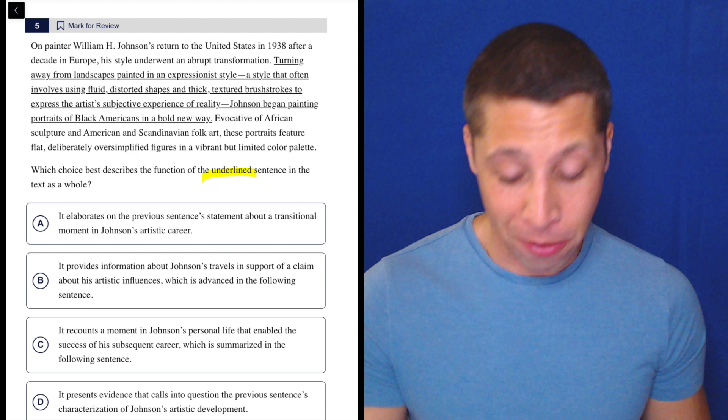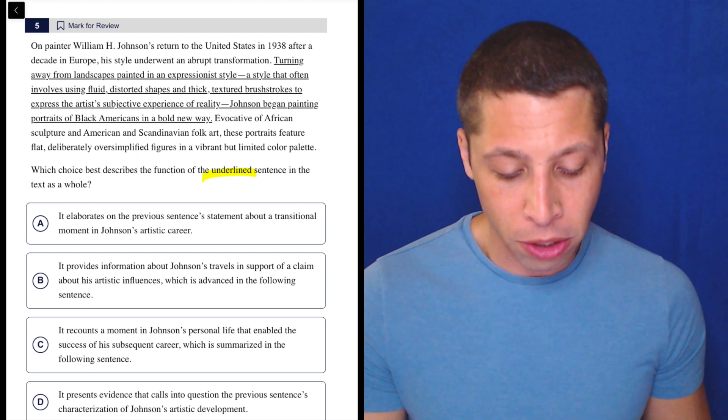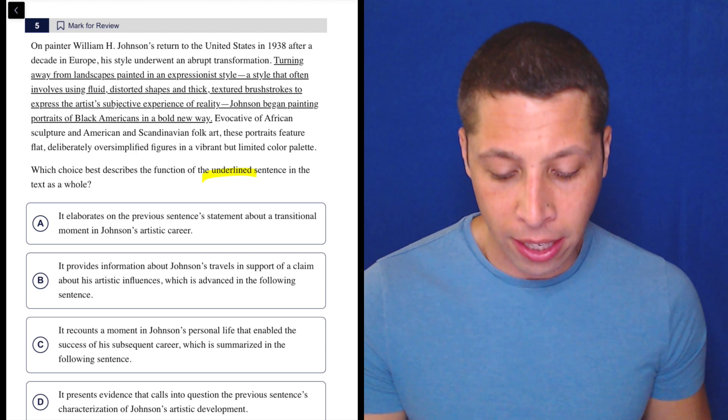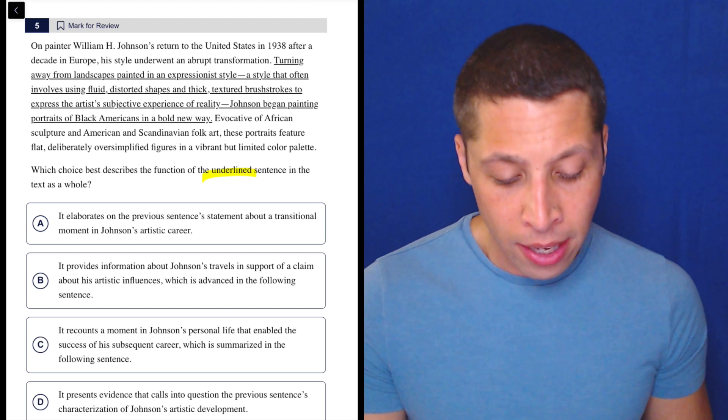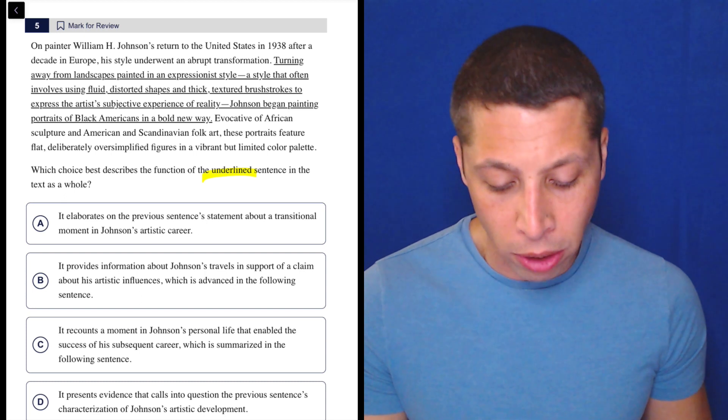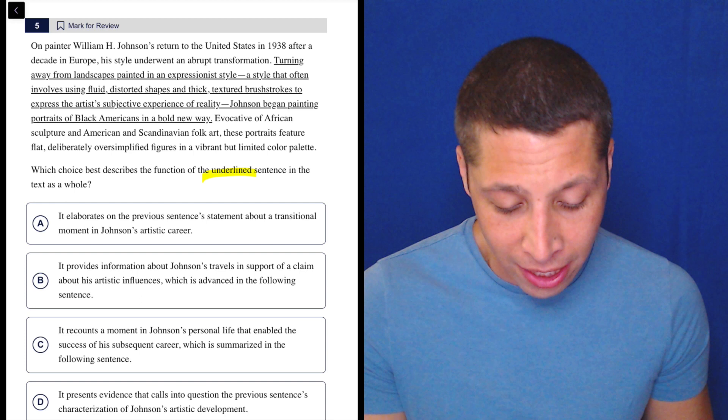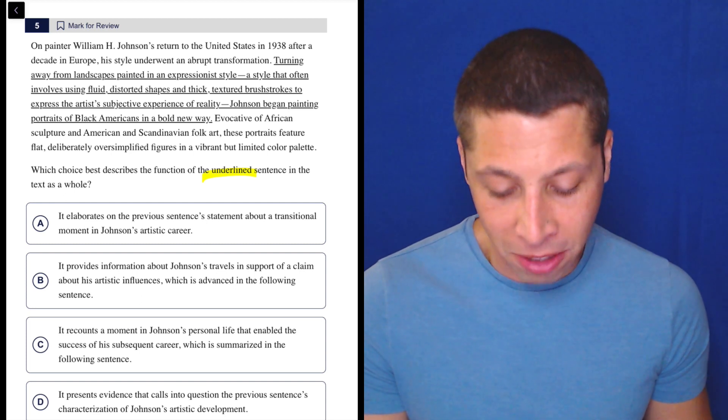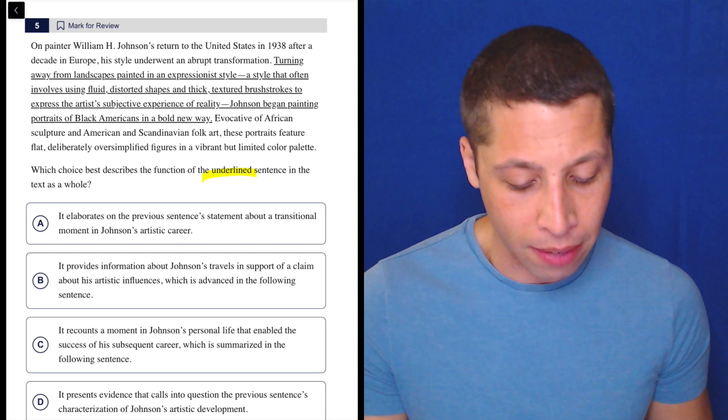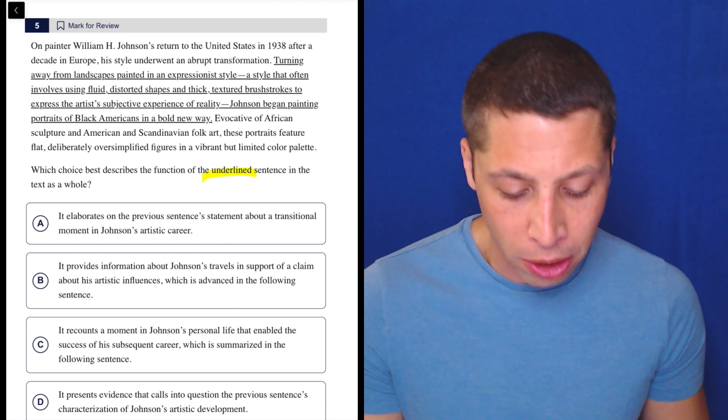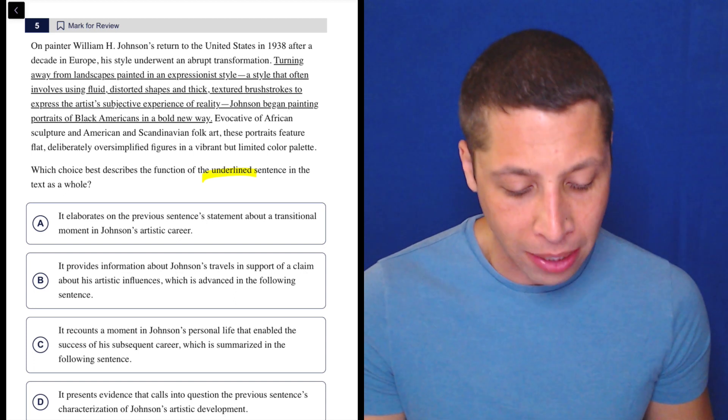We've got to read everything though. On painter William H. Johnson's return to the United States in 1938, after a decade in Europe, his style underwent an abrupt transformation. Turning away from landscapes painted in an expressionist style, a style that often involves using fluid distorted shapes and thick textured brushstrokes to express the artist's subjective experience of reality, Johnson began painting portraits of black Americans in a bold new way.